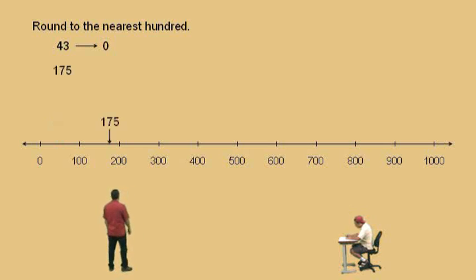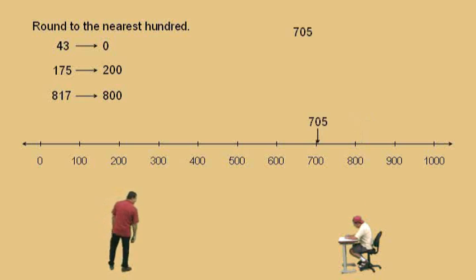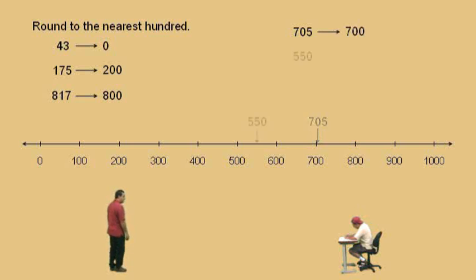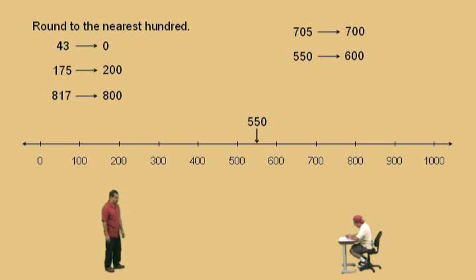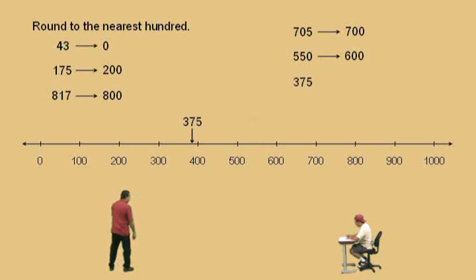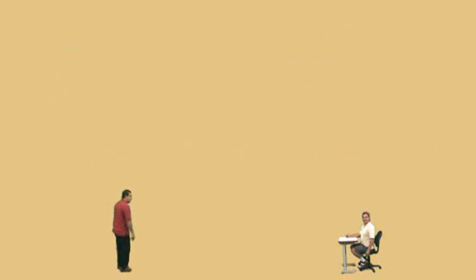All right, Charlie. Now, 175 — what does that round to? 200. Very nice, Charlie. 817 rounds to 800. Very nice. Let's go to another one — 705. What does that round to, Charlie? 700. Very nice. How about 550? It's in the middle, so we round to the right — that gives us 600. We're rounding to the nearest hundreds, don't forget. And now 375 is closest to which hundred, Charlie? 400 — so it rounds to 400. Very nice there, Charlie.